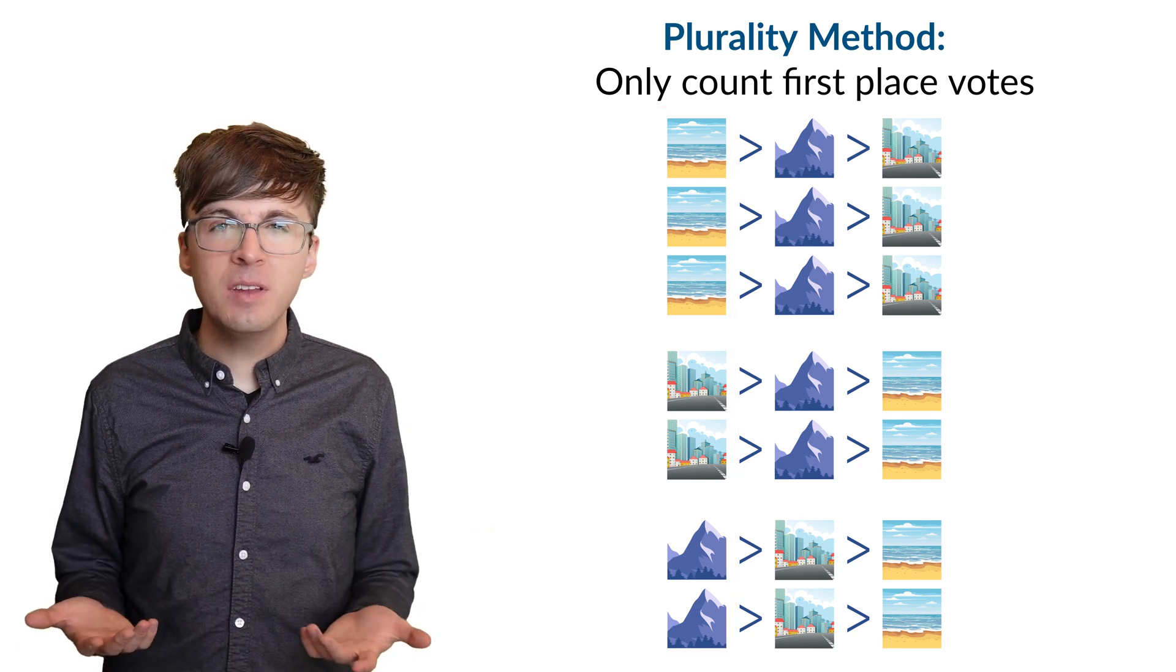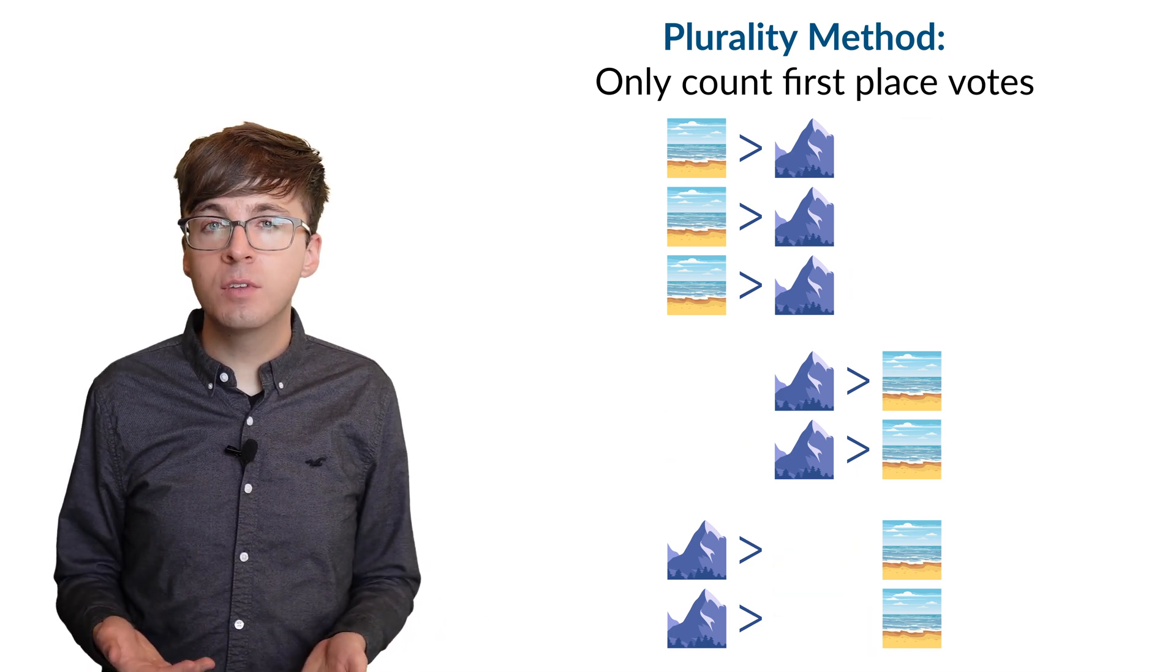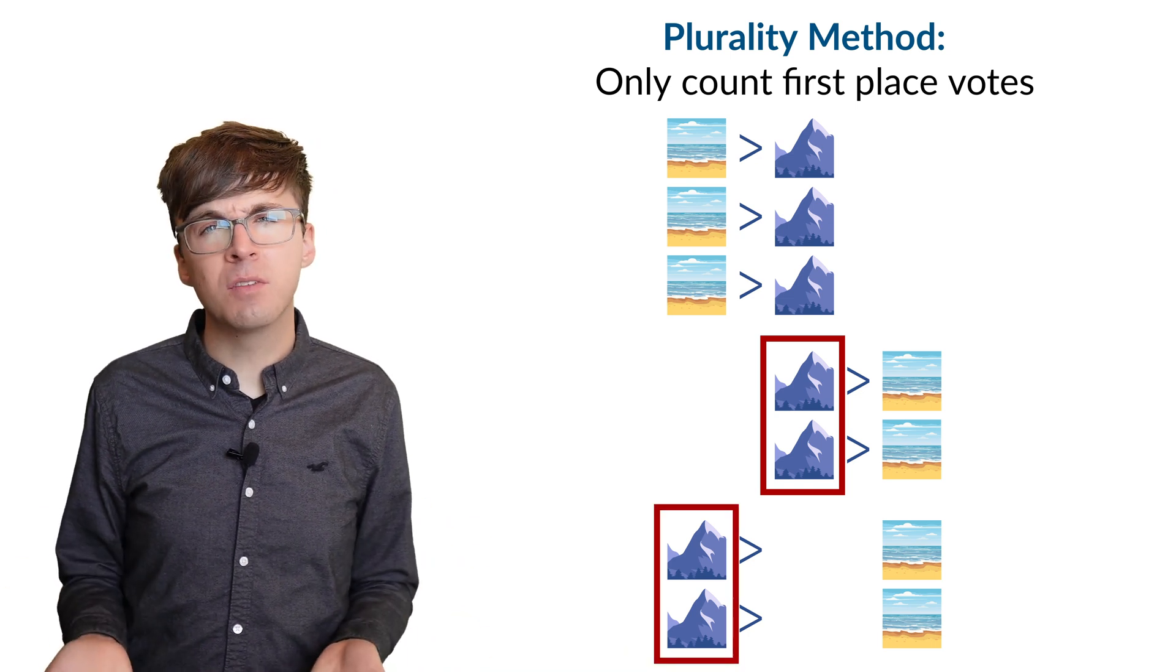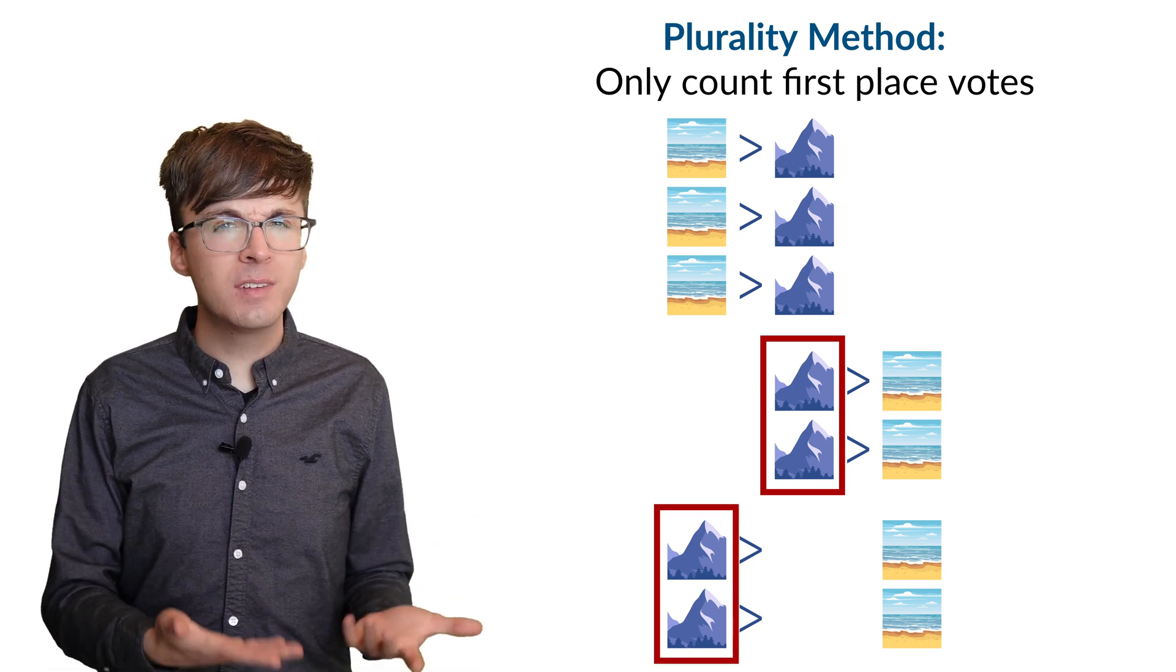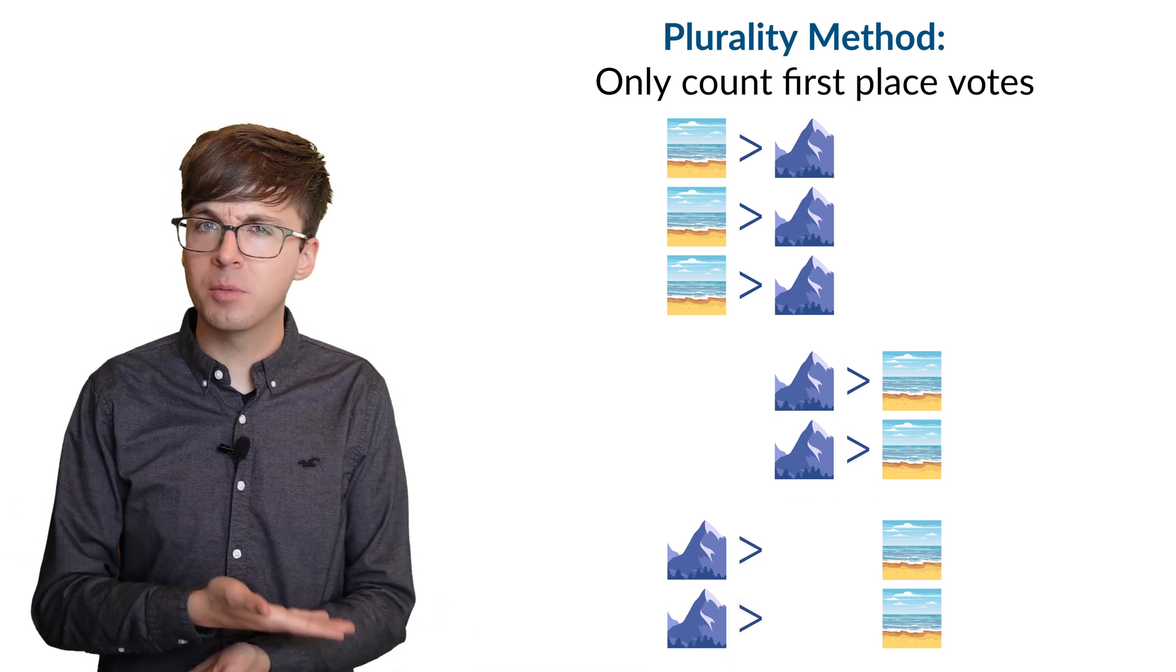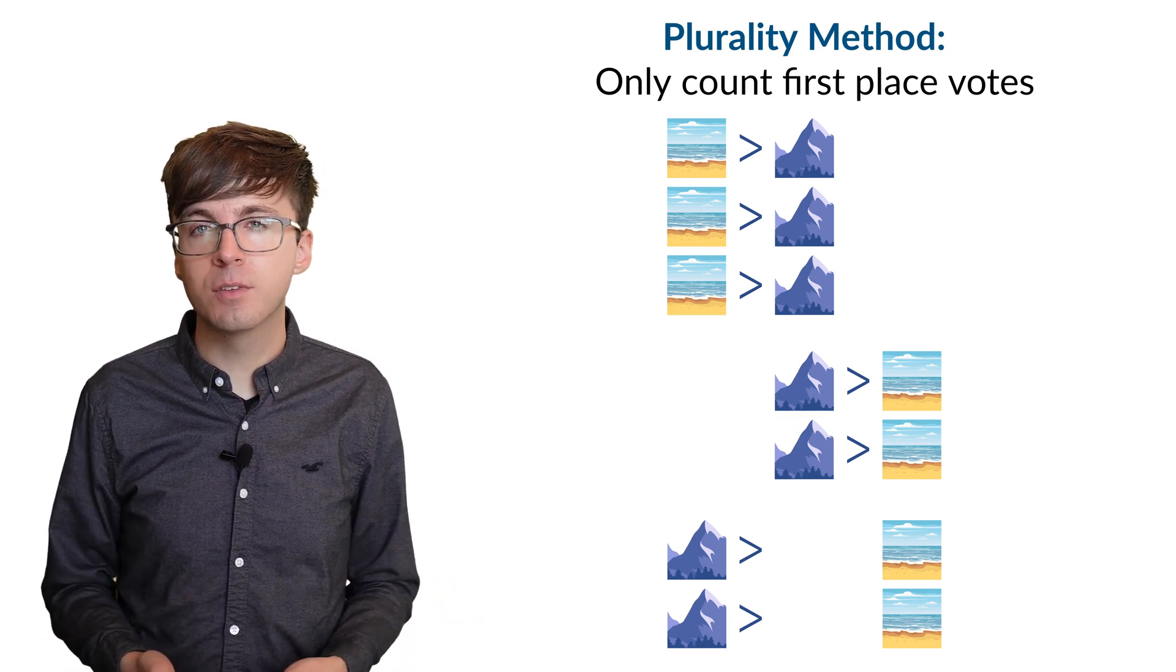But what happens if suddenly the city is no longer a possibility? Once city is removed, now mountains are the first choice of four out of the seven people. By removing the city, the group's preference for the mountains and the beach have swapped. So plurality voting violates the independence of irrelevant alternatives.